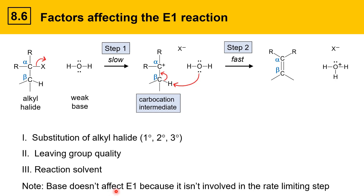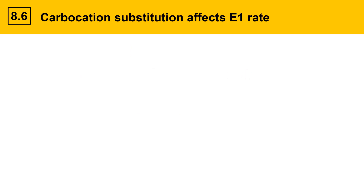Base is not included in this list. Base doesn't impact the E1 reaction because it isn't involved in the rate-determining step. The first step — the slow step — just involves the alkyl halide forming a carbocation. The weak base doesn't get involved in that first step; it only gets involved in the second step, which is fast. Since carbocations are intermediates in the E1 mechanism, they influence the reaction rate.